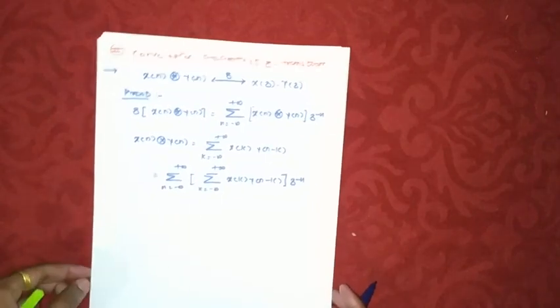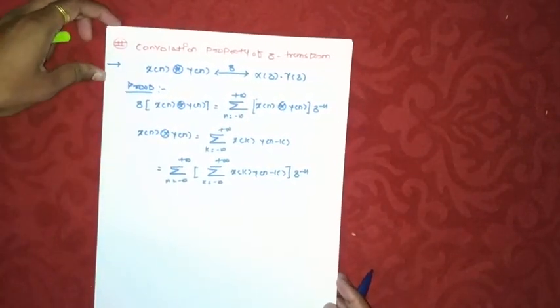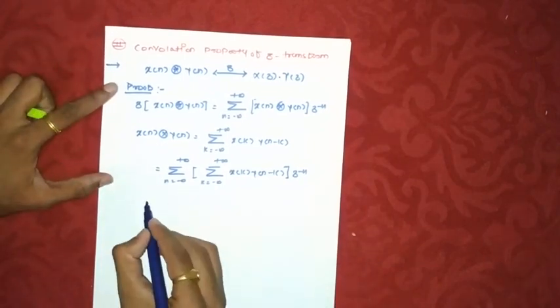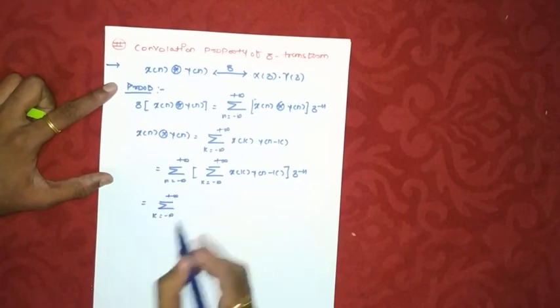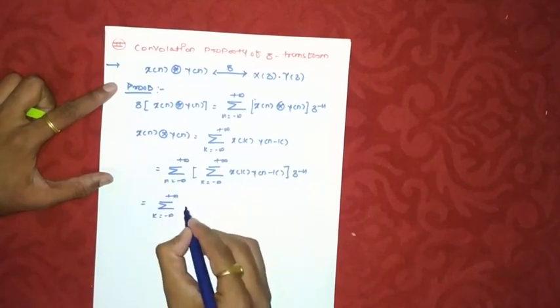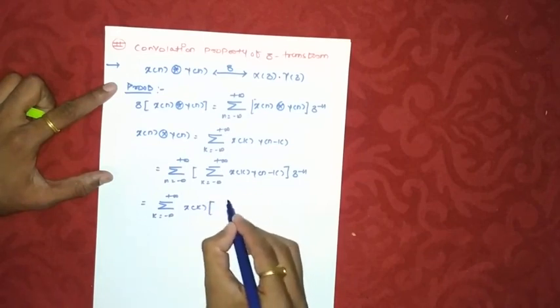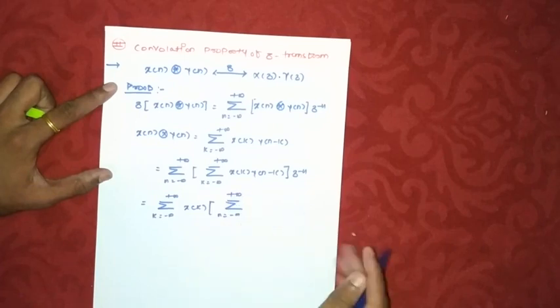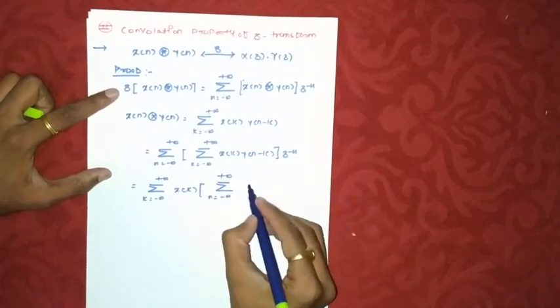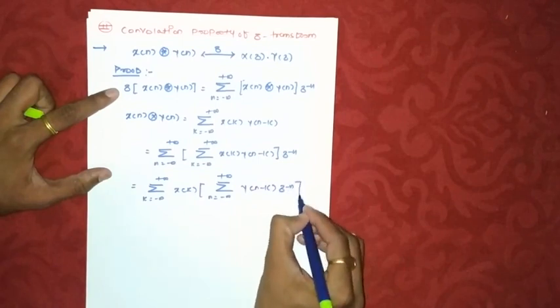Now to simplify this we will try to take the terms which are quite easy as common. So first case I am writing summation k minus infinity to plus infinity. This term we will take outside as x of k because it is a function of k. Next we will collect all the terms of n. So summation n from minus infinity to plus infinity, this is y of n minus k into z raised to minus n.